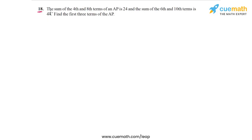The problem statement in question 18 is as follows: the sum of the 4th and 8th terms of an AP is 24, and the sum of the 6th and 10th terms is 44. We have to find the first three terms of the AP.